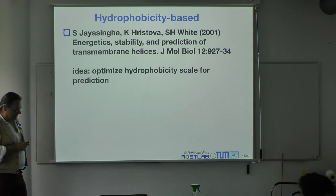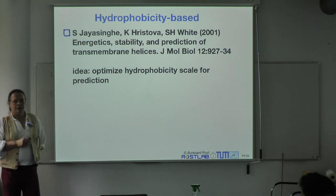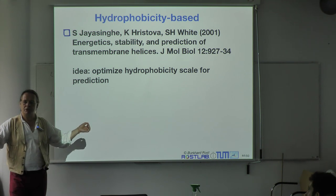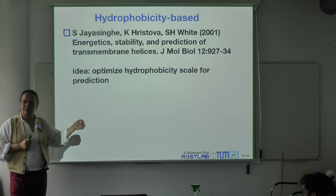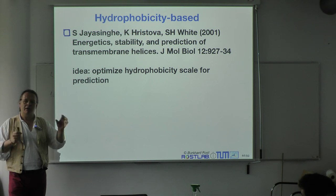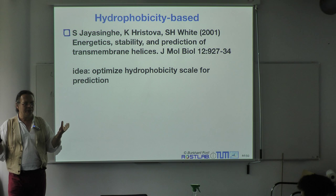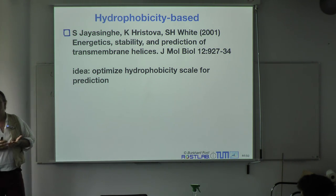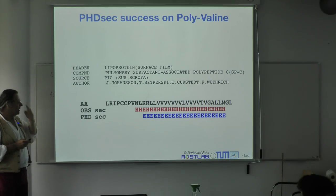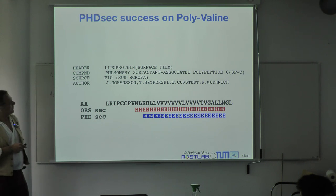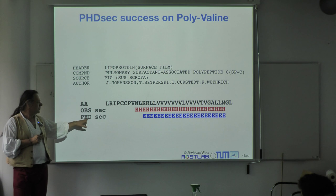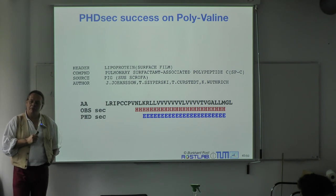Another idea from the White group: rather than looking at hydrophobic residues to identify membrane helices, turn it upside down — look at actual membrane helices and argue that they are correctly evolved for the environment. Find the scale that best describes the set of observed residues in membrane helices. This is like machine learning the membrane environment. Another way is to retrain the existing secondary structure prediction method — but trained on membrane proteins instead of globular proteins.